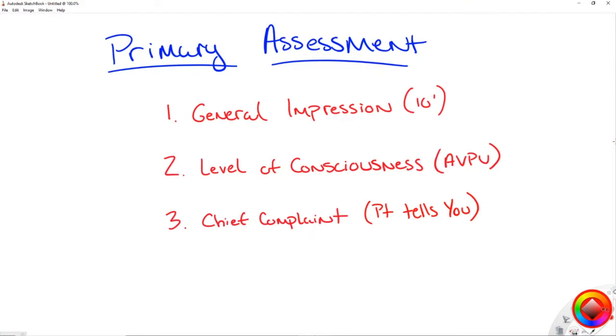The first thing you absolutely need to do within your primary assessment is as you're walking up to your patient, you're going to do your 10-foot assessment or that general impression. You're going to look at them. This is your visible assessment only. You haven't even laid your hands on the patient. You are literally doing this from the 10-foot mark across the room. Do they look sick? Do they look pale, cool, clammy? How do they visibly look to you? That would be your general impression.